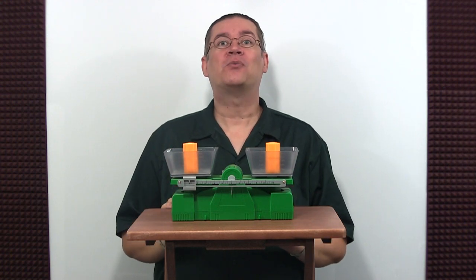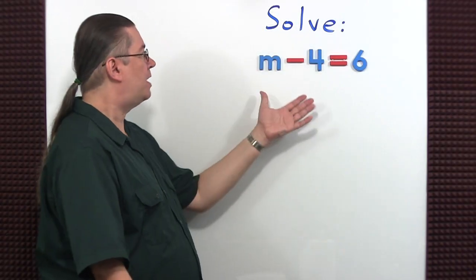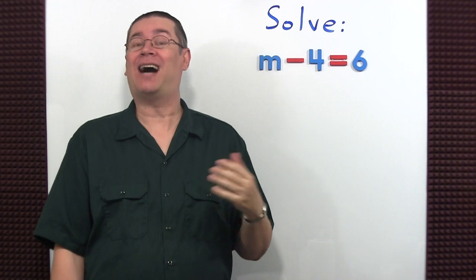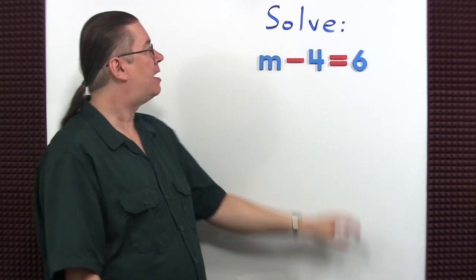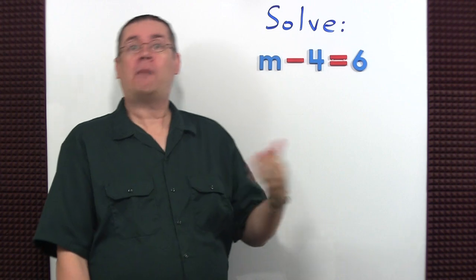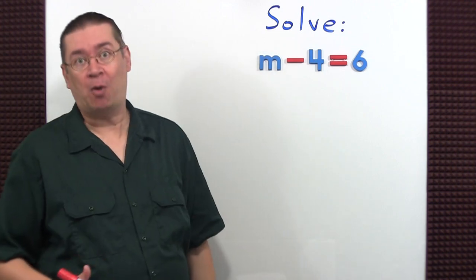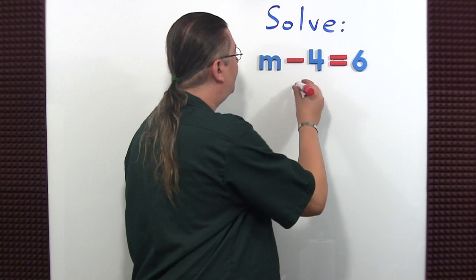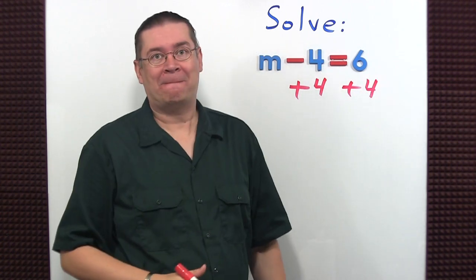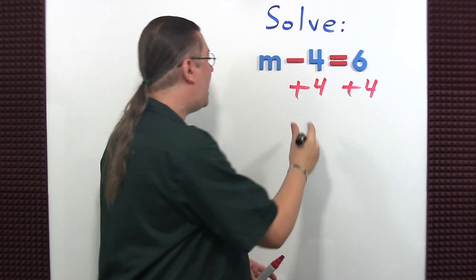Now let's try this with algebra. To solve this equation, I want to get the variable m by itself. I want to isolate the variable. 4 is being subtracted from it, so the opposite of subtraction is addition. So let's add 4 to both sides of the equation. Plus 4 here, plus 4 there. The 4s cancel, I'm left with just m.